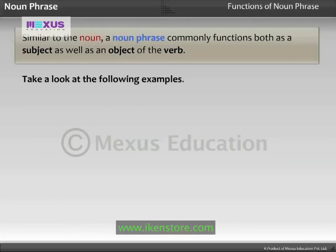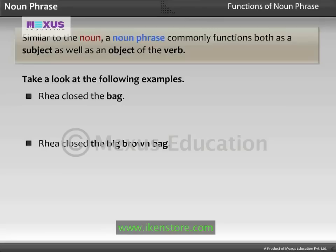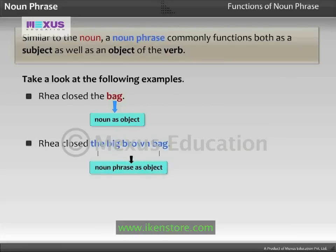Take a look at the following examples. In the first sentence, the Noun 'bag' is the object of the verb 'closed'. In the same manner, in the second sentence, the Noun Phrase 'The Big Brown Bag' is the object of the verb 'closed'.